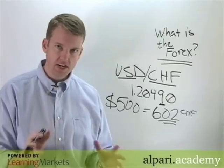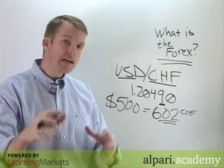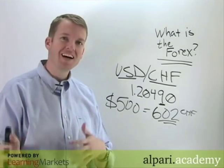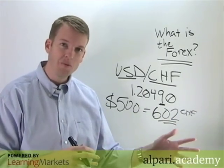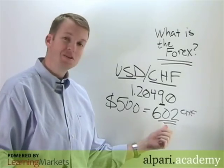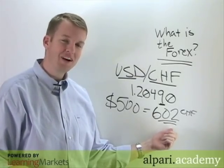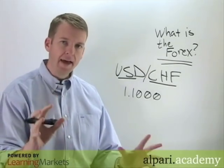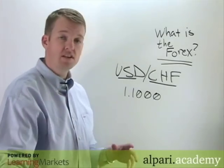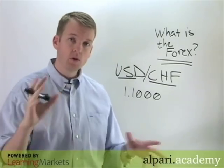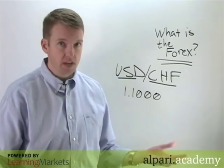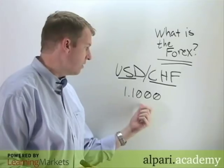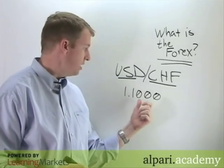This is one half of the foreign exchange transaction. Now let's take a step back and talk about what happens at the end of the summer when we've decided to leave our vacation and go home. We haven't spent any of our spending cash, so we still have those 602 francs. Now it's time for our vacation to end, and we're looking to exchange them back into dollars. Some time has elapsed, and the relative value between these two currencies has changed.